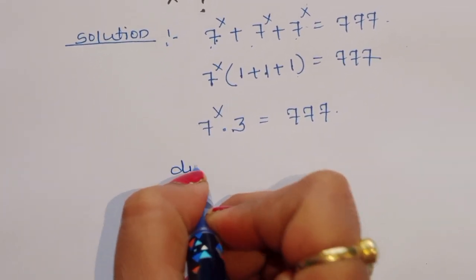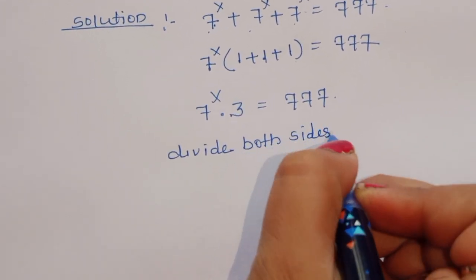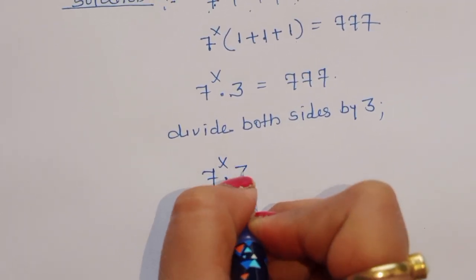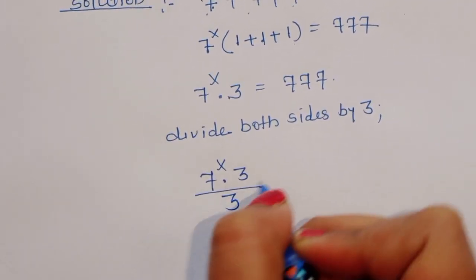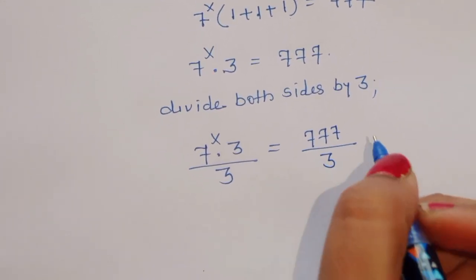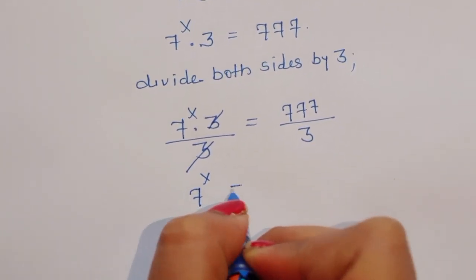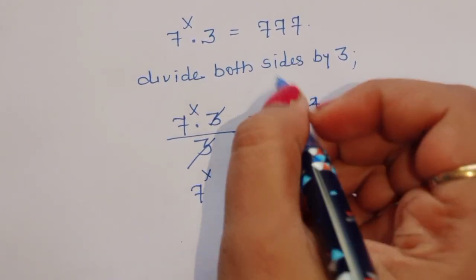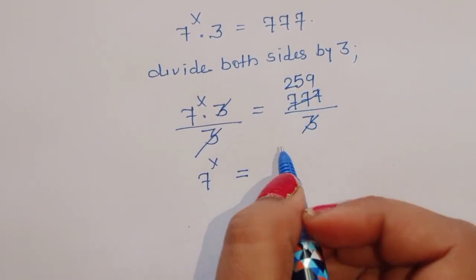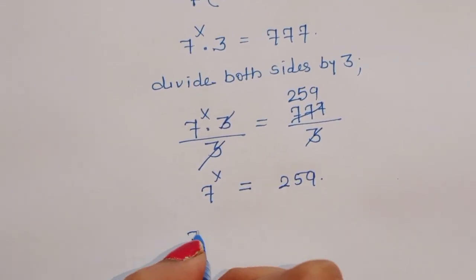So 7 power x times 3 is equal to 777. Now we divide both sides by 3. Then 3 cancels from the left side, and 777 divided by 3 gives us 259. So 7 power x is equal to 259.